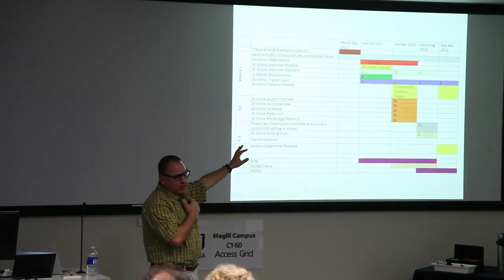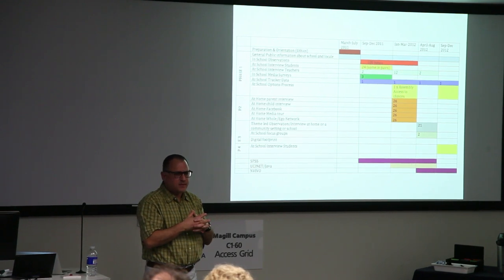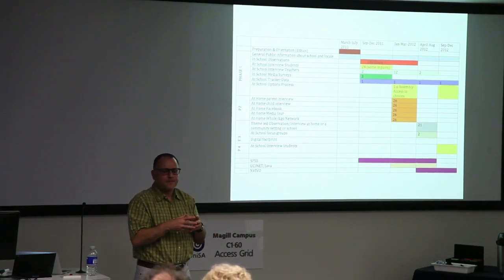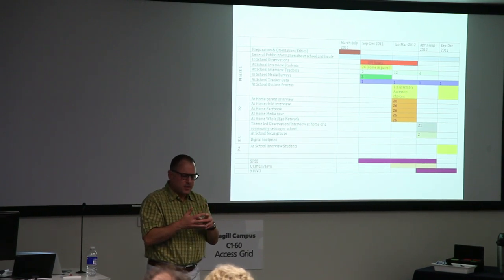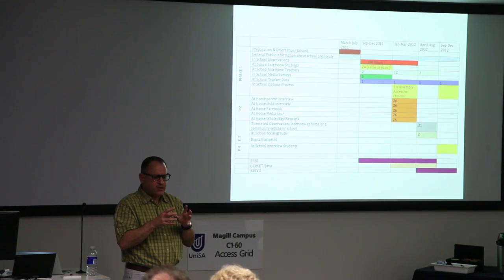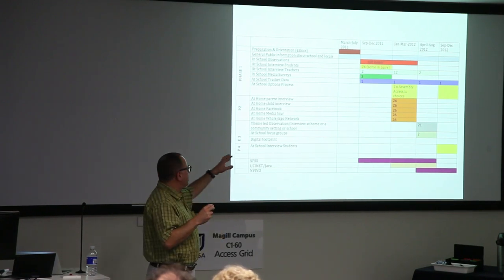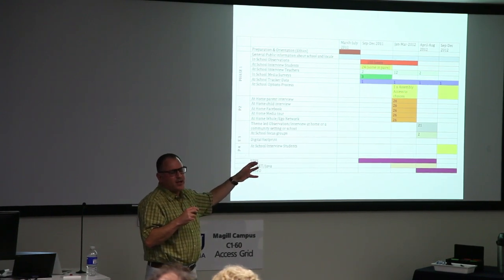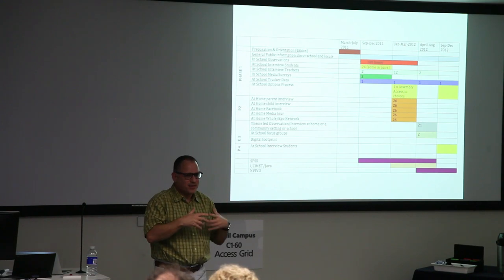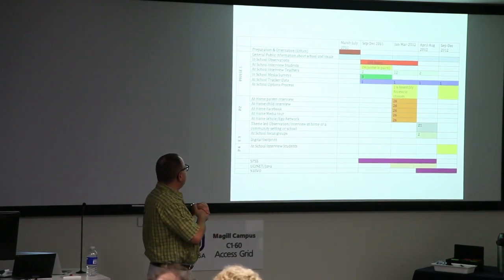The school gave us access to their management system — SIMS. We also went to all school events: there was a school play, options evenings where the kids chose subjects to specialise in for GCSE. We chose this year partly because, in theory, you're only meant to have a Facebook account when you're 13, though every child had got their Facebook account when they went to secondary school at 11 or 12 — it's like a marker of growing up.